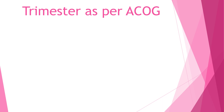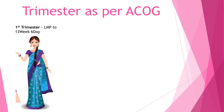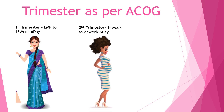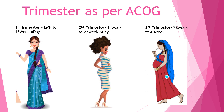Trimesters as per the ACOG: the first trimester is from LMP to 13 weeks 6 days, the second is from 14 weeks to 27 weeks 6 days, and the third is from 28 weeks onwards till 40 weeks. The total pregnancy duration is 40 weeks, divided into these three trimesters.